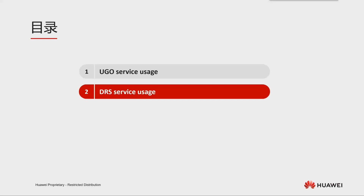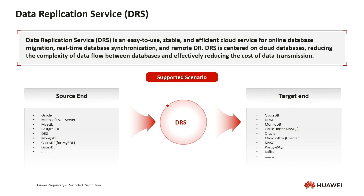Then we explain how DRS works in a simple way, so you can see how DRS transports data. Finally, we will walk you through setting up a task from Oracle to GaussDB, so you can get more familiar with how to use DRS. DRS is a self-developed data transfer service for transporting data between databases. It supports various database engines and covers most mainstream databases in the market, used as source and target in cross-database data synchronization. DRS supports various synchronization and heterogeneous data flow scenarios.